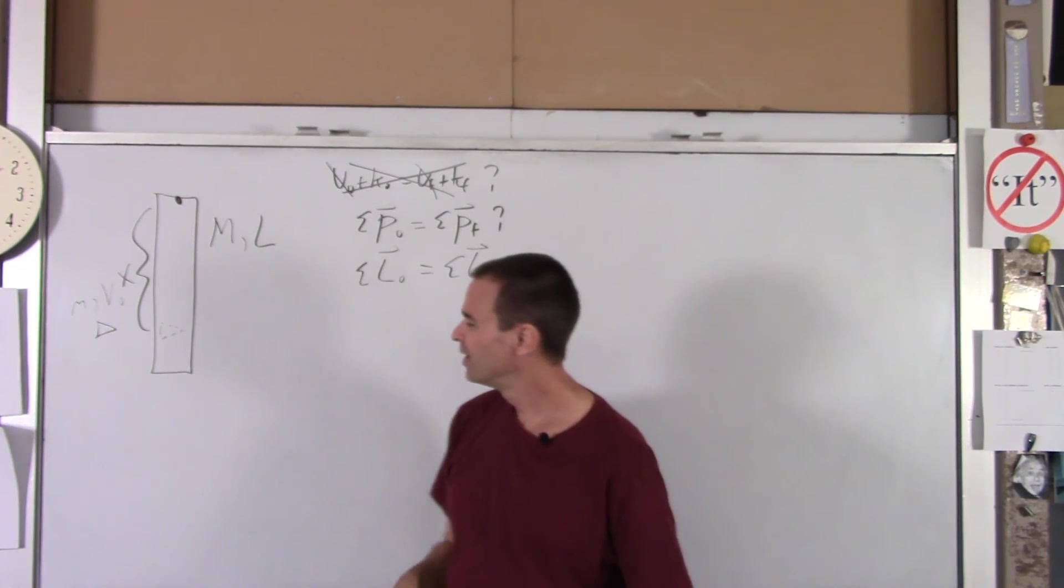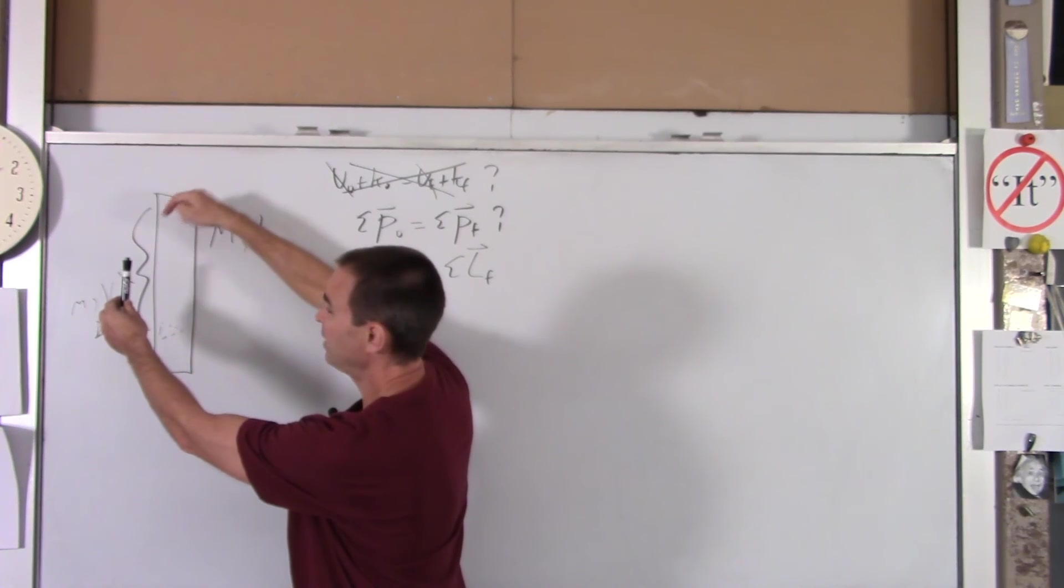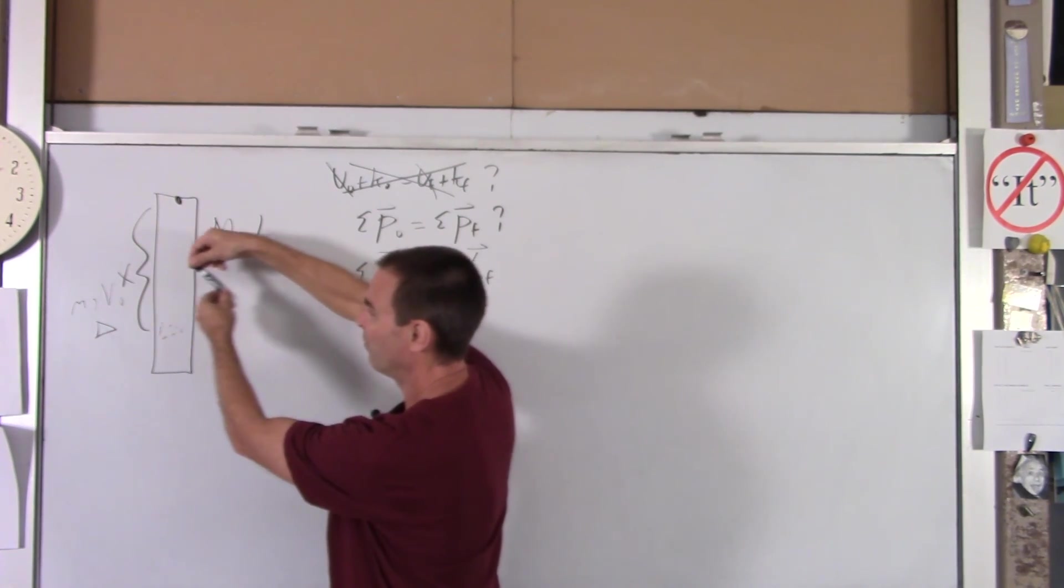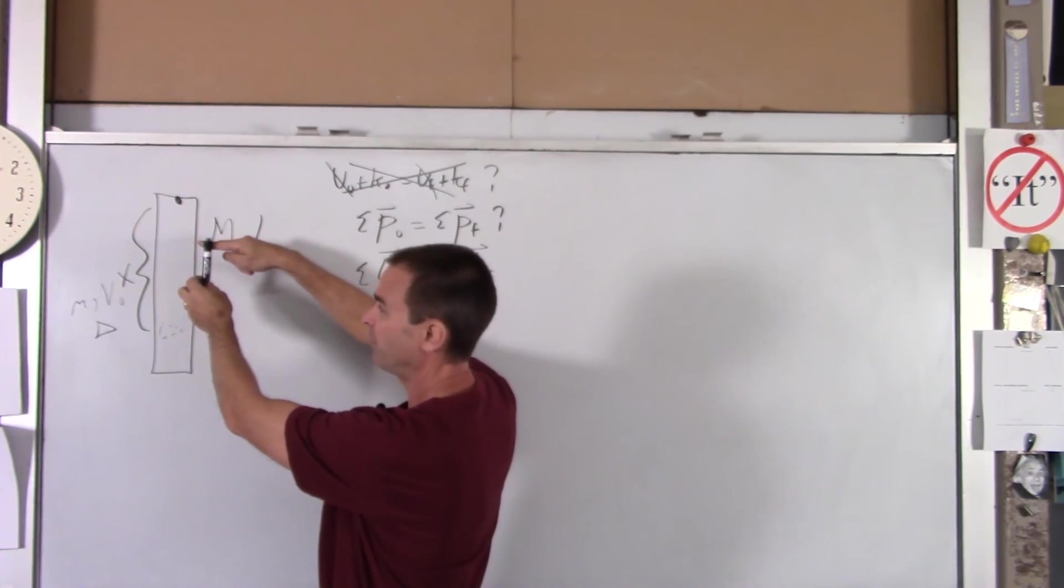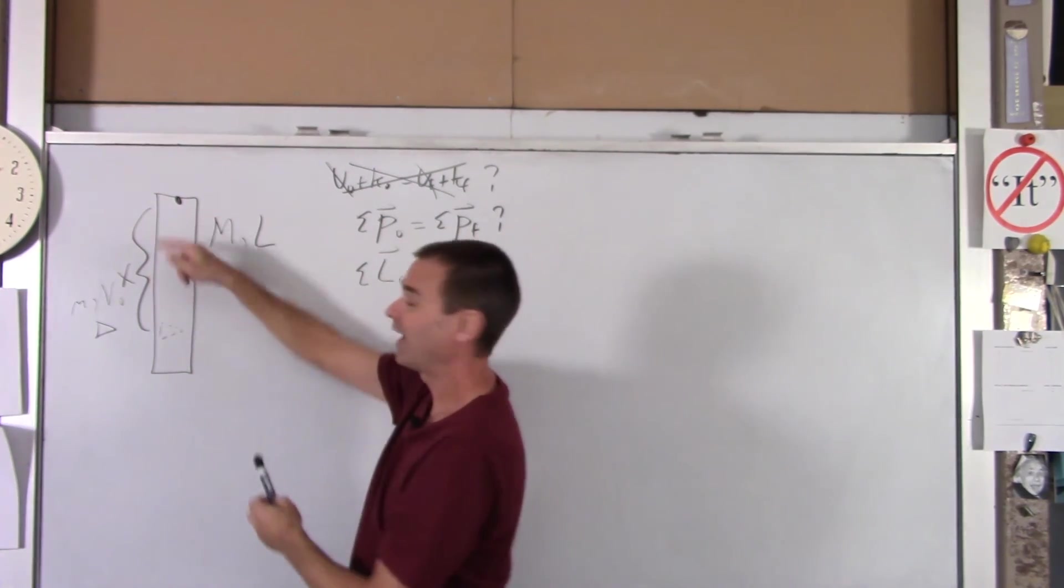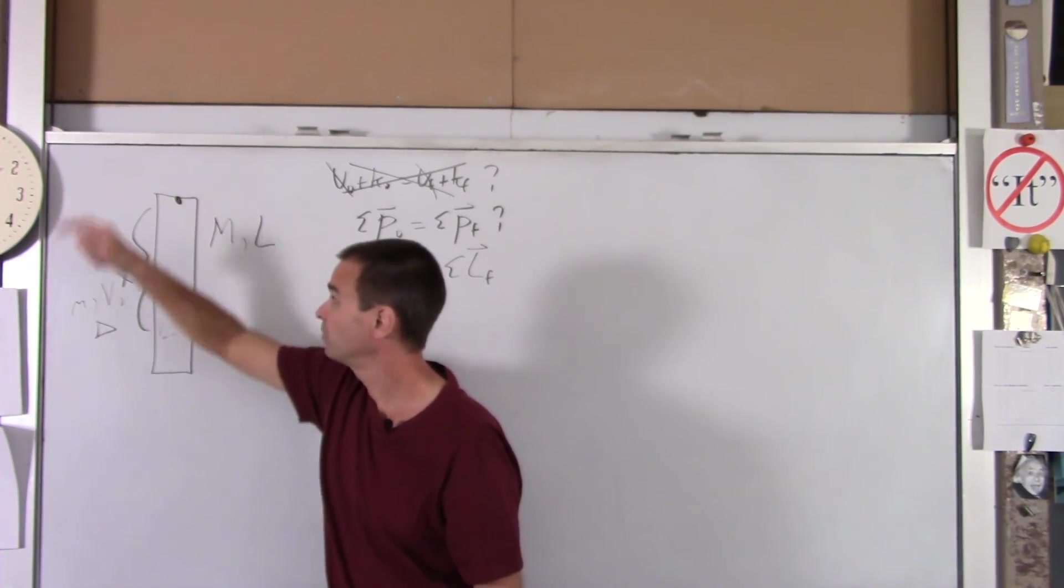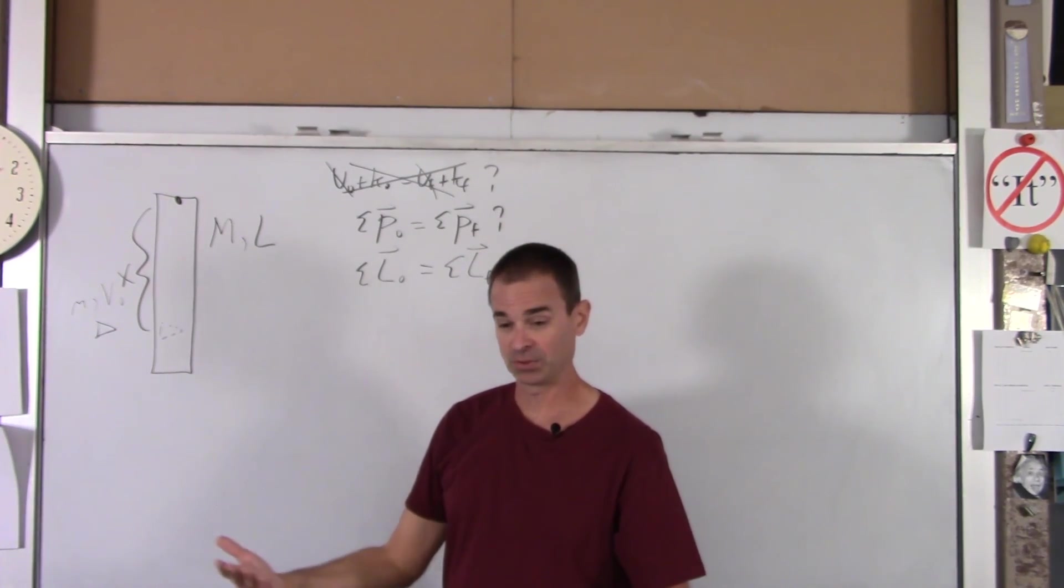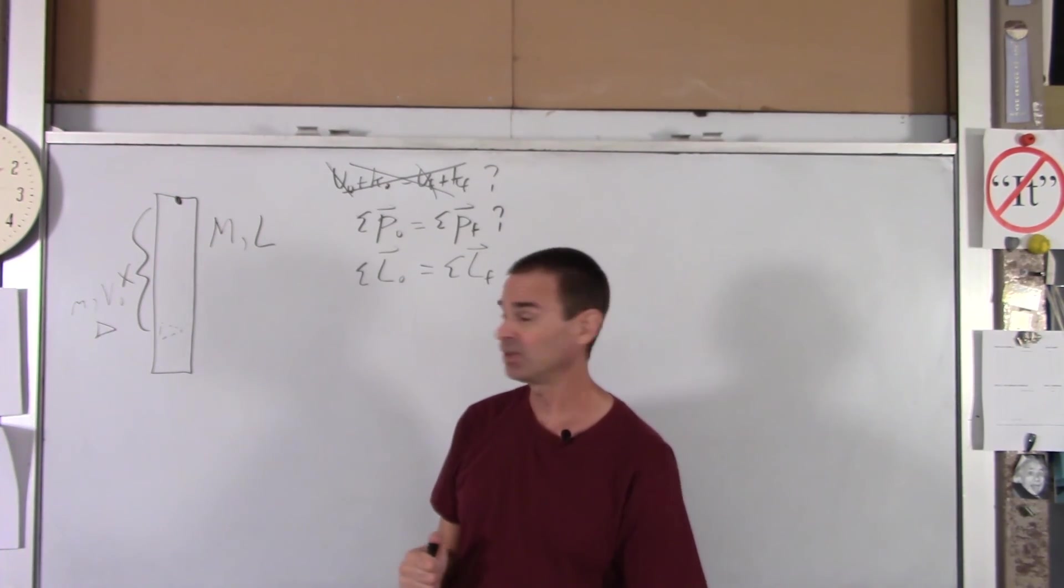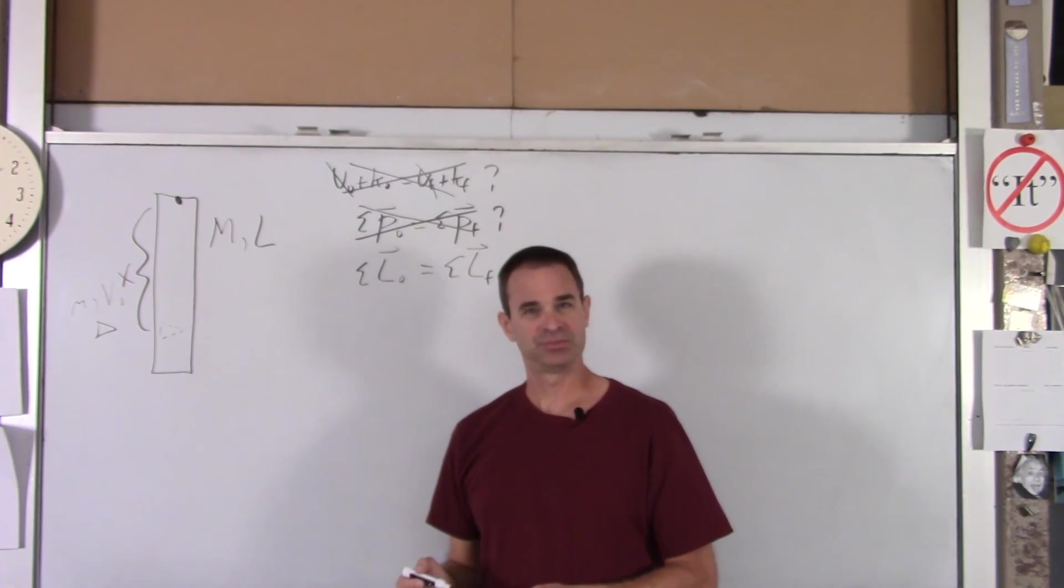They are external to the system, but they cancel, so we don't have to worry about those. However, when this bullet hits this bar, if this pin wasn't here, both would go flying this way. So this pin has to exert a force to the left on this bar. Since this pin has to exert a force to the left on that bar to hold it in place, there is an external force that is unbalanced acting on our system, meaning linear momentum is not conserved.